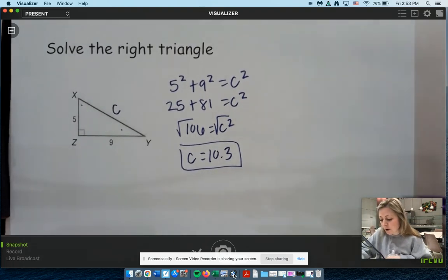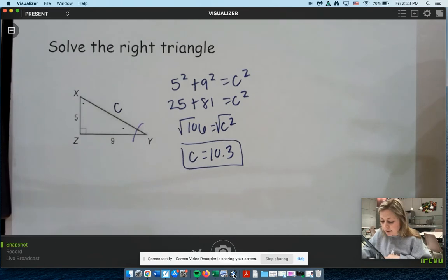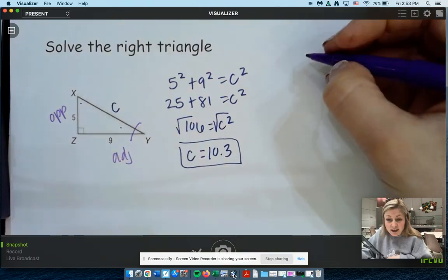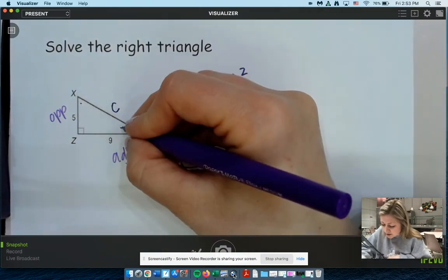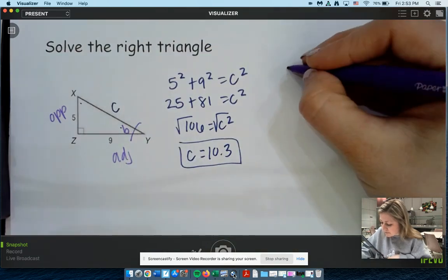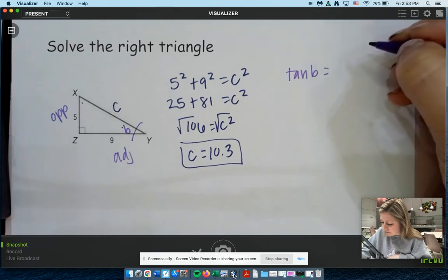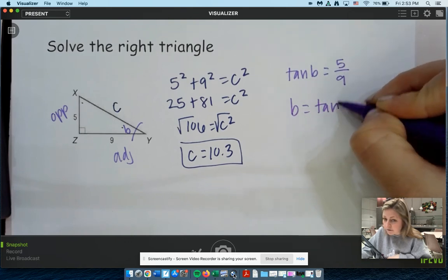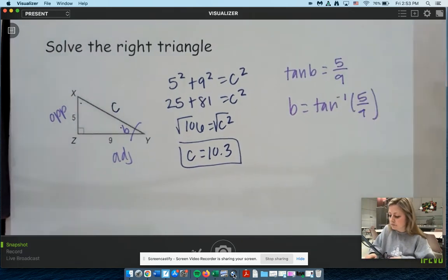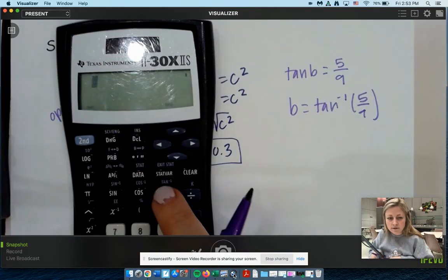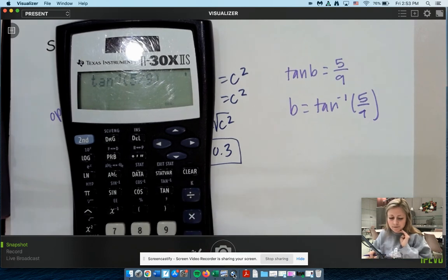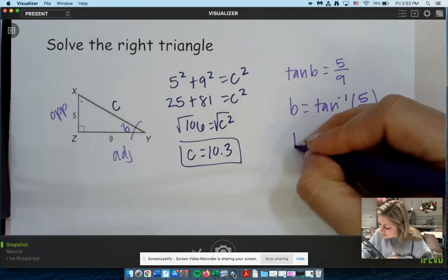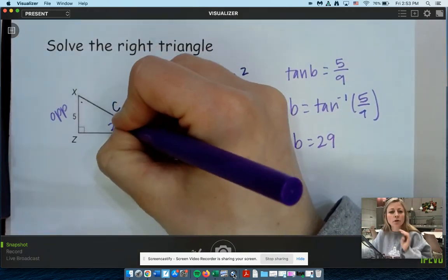And now you get a pick. I'll just pick Y. And we'll label our sides so we can find it. 5 would be opposite. 9 would be adjacent. We know that that would be our tangent function. So if I call this, I don't know, let's do B. So if we do tangent of B equals opposite over adjacent. So 5 over 9. To get B by itself, we take the inverse. So tangent inverse of 5 over 9. Calculate our work. Second tangent. 5 divided by 9 is 29. So angle Y is 29.